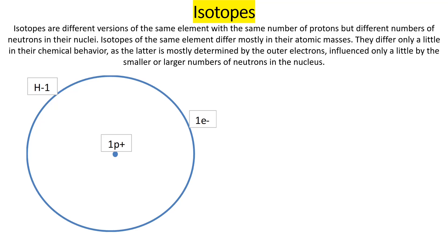Let me show you the simplest isotope in nature, called H1. I hope you recognize this is the same picture I showed previously and introduced as a hydrogen atom. This first isotope of hydrogen makes up 99.98% of element hydrogen.